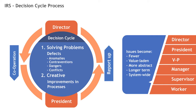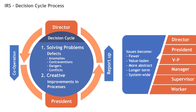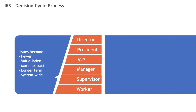Looking at the diagram not just in terms of statements of responsibilities and authority, but as problem-solving and information flow — the IRS is a dynamic problem-solving machine. It's a sorting machine. It sorts problems out to the right levels of authority, control, and responsibility.